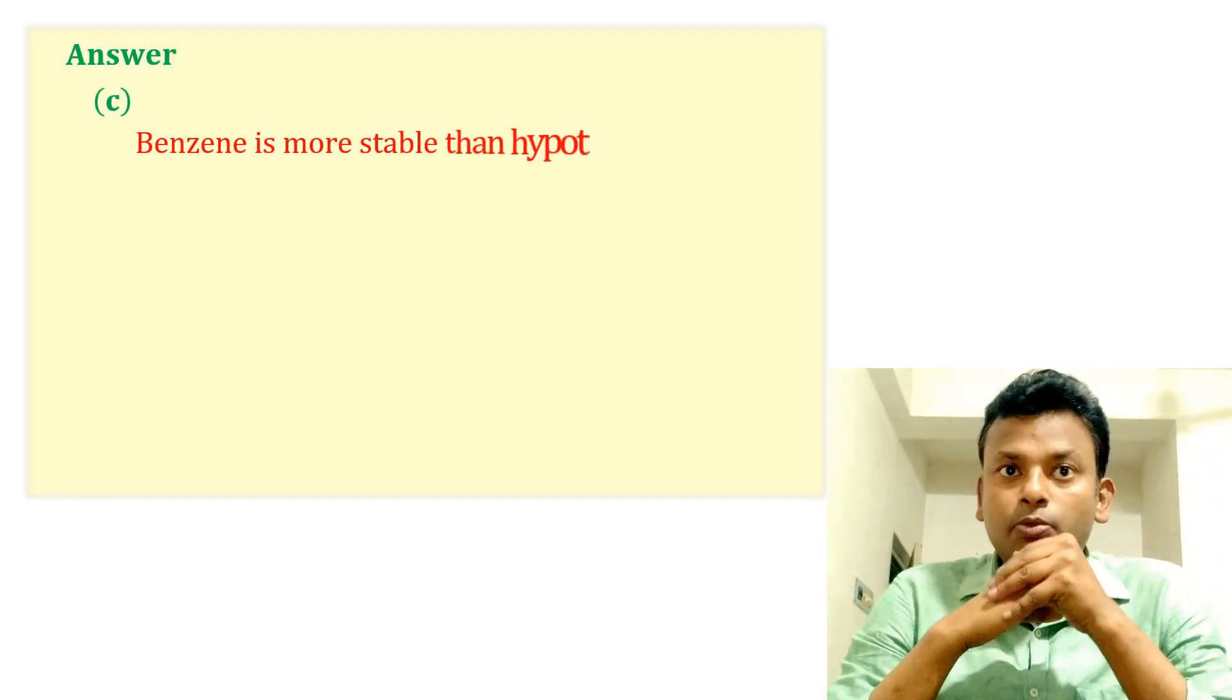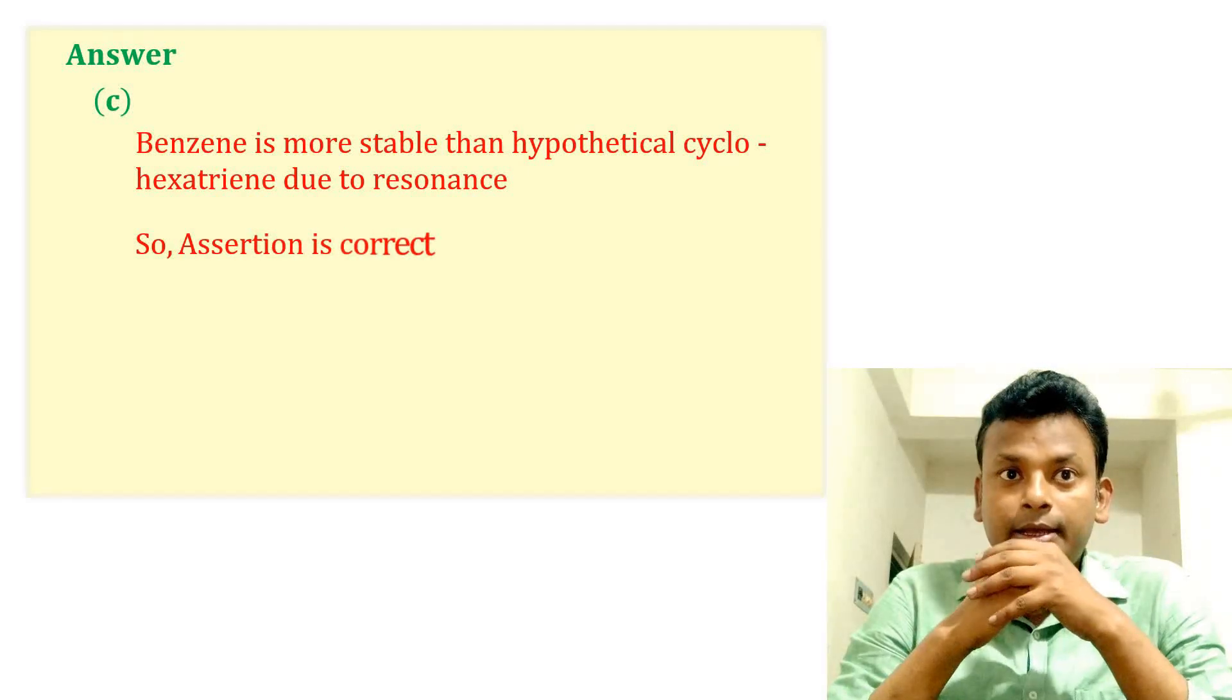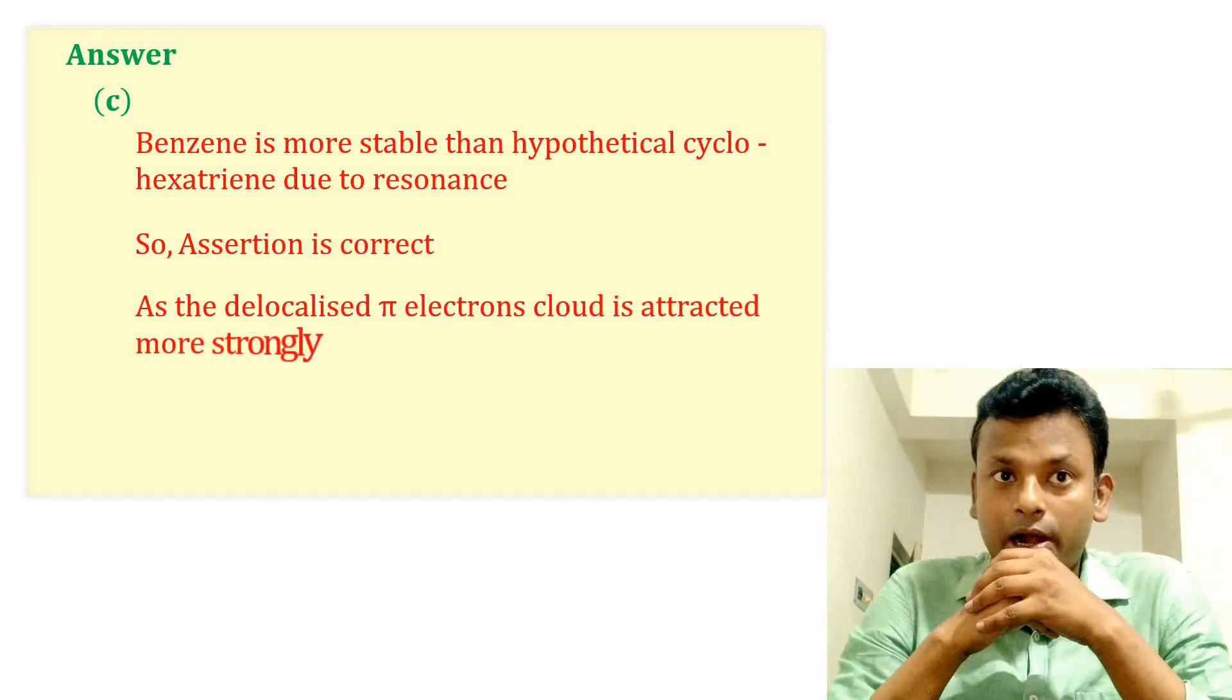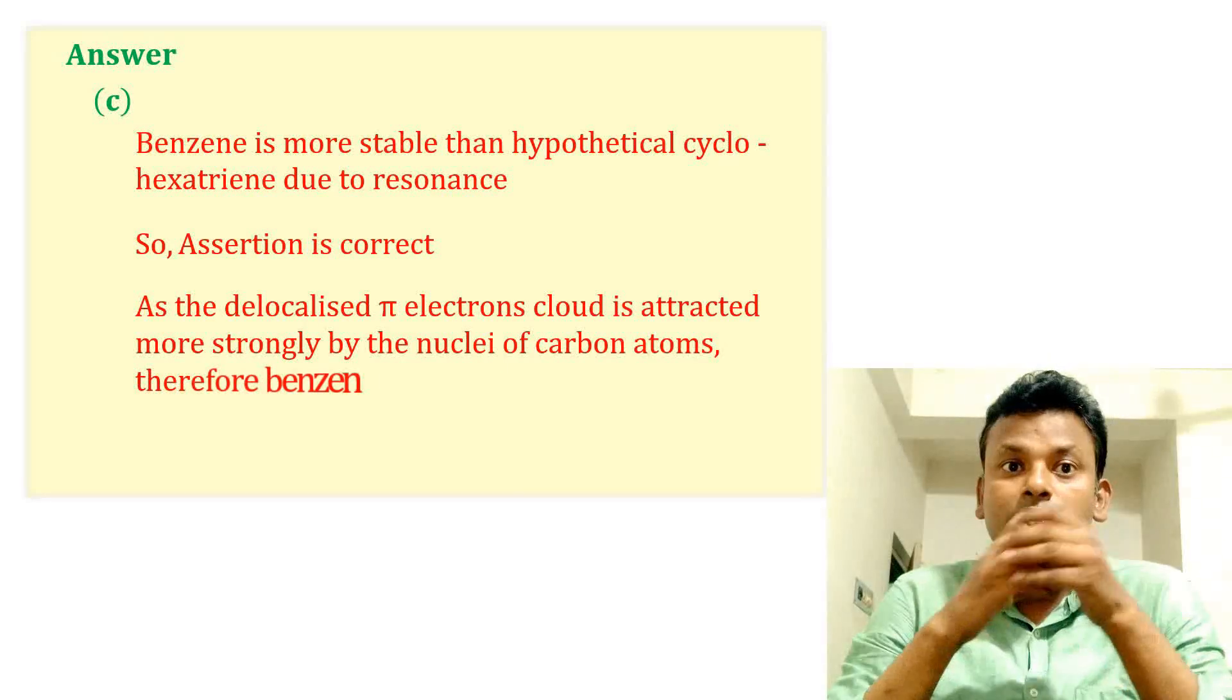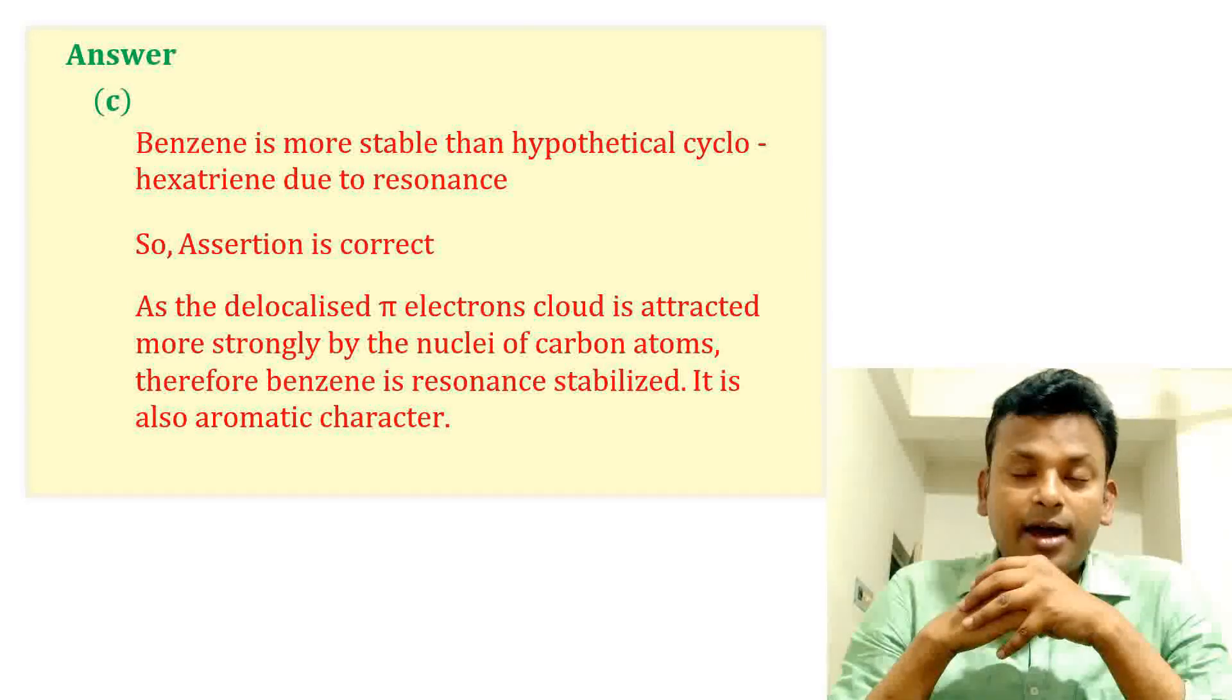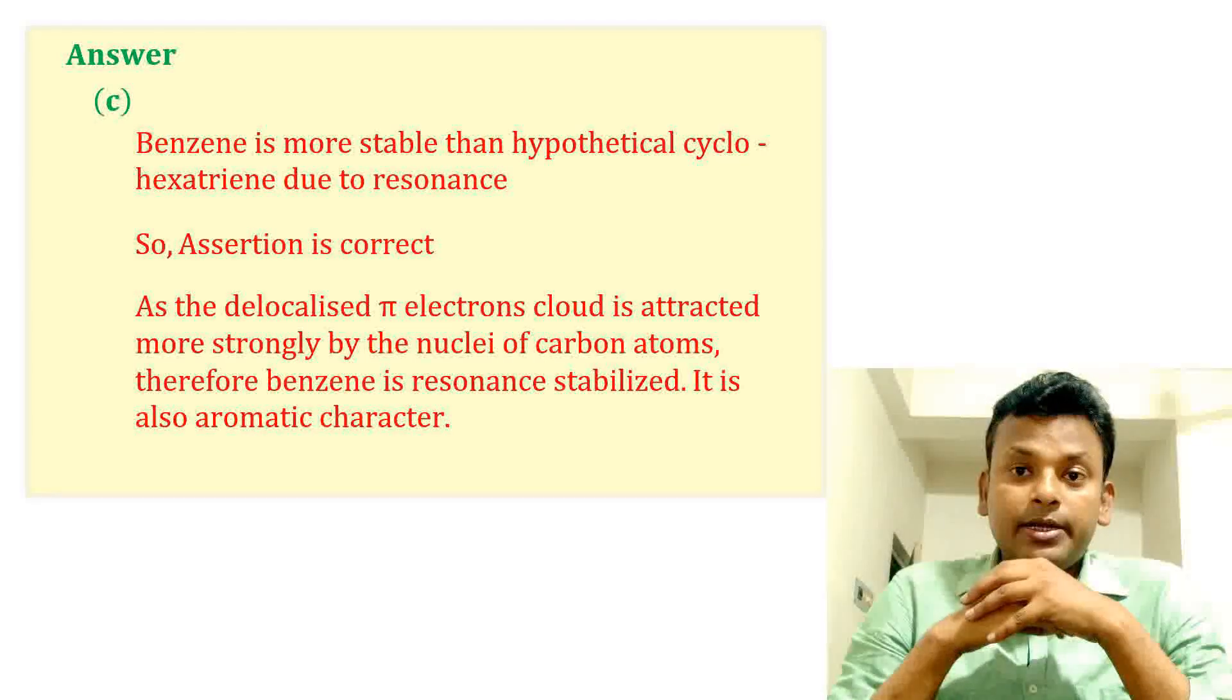Benzene is more stable than hypothetical cyclohexatriene due to resonance, so the assertion is correct. As the delocalized pi electron cloud is attracted more strongly by the nuclei of carbon atoms, therefore benzene is resonance stabilized and has aromatic character. Option C is correct answer, meaning both assertion and reason are correct, and reason is the correct explanation of the assertion.